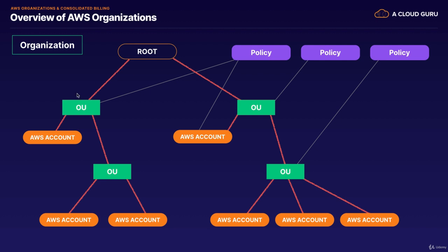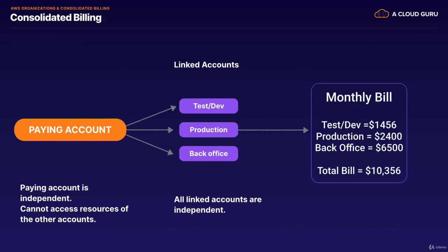So if we apply this policy to an organizational unit — perhaps this is our finance team and we don't want our finance team using something like EC2 — we say let's block EC2 to the entire finance team. That will then trickle down to all the other AWS accounts and organizational units underneath it. So that's all AWS Organizations is — it allows you to have multiple AWS accounts and centrally manage them. You can also do consolidated billing. The fundamental principle behind pricing with AWS is the more that you use, the less that you pay.